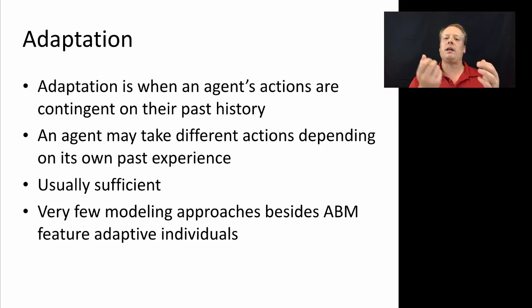An agent may take different actions depending upon its own past experience. In order to really model adaptation within an agent, you need to have a history that is coming along with every agent as well as a rule that tells how to act upon that history in the context of future events. Very few other modeling approaches besides ABM feature adaptive individuals, and therefore this is usually a sufficient condition for applying agent-based modeling.